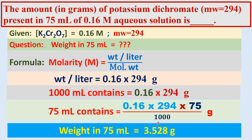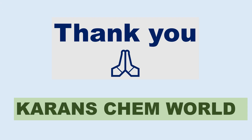That is equal to the weight of potassium dichromate present in 750 ml of 0.16 molar aqueous solution, which is 3.528 grams. Thank you guys for watching.